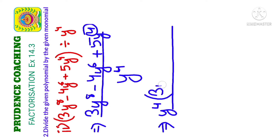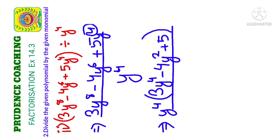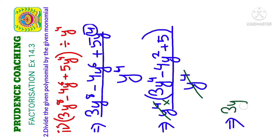Taking y⁴ common: in the first term, y⁸ divided by y⁴ leaves y⁴, so we have 3y⁴. In the second term, y⁶ divided by y⁴ leaves y², giving minus 4y². In the third term, y⁴ divided by y⁴ leaves no y variable, giving plus 5. The expression becomes y⁴(3y⁴ minus 4y² plus 5) divided by y⁴. The y⁴ cancels, and the final answer is 3y⁴ minus 4y² plus 5.